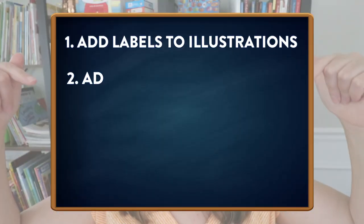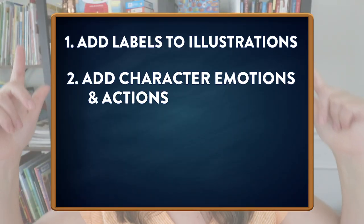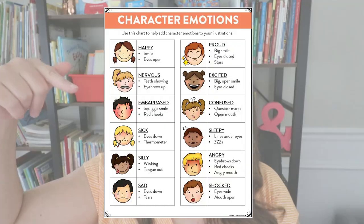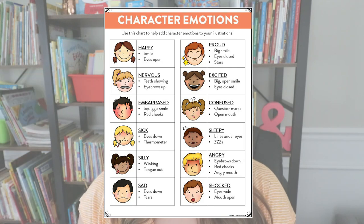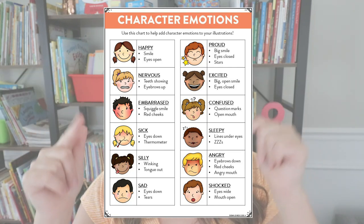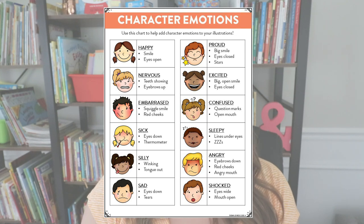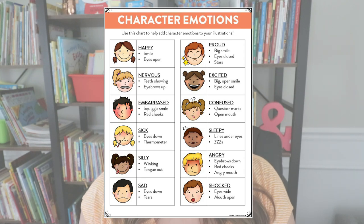The next two things I like to have students add to their illustrations have to do with the characters — we talk about how characters feel and how characters move. So I like to teach students how to add character emotions and character actions. For character emotions, I like to use an anchor chart like this one, and we spend a whole mini lesson looking at these different character faces and what types of things we might add to our illustration to show that a character feels a certain way.